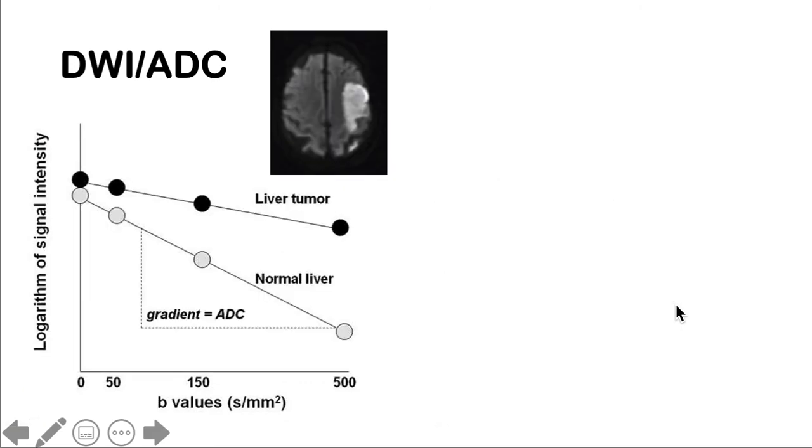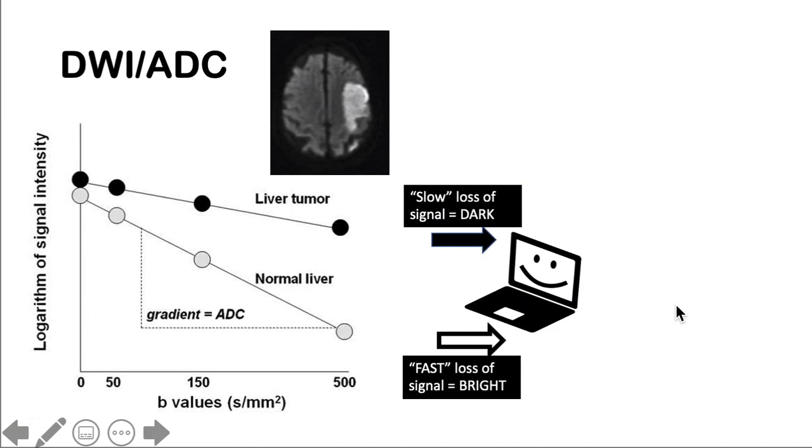What we do after that is tell the computer or MRI machine to create a map. We tell the MRI machine that tissues with slow loss of signal, such as the liver tumor, will be plotted as a dark signal, while tissues with fast loss of signal, denoted by this sharp slope, will be plotted as a bright signal on the images.